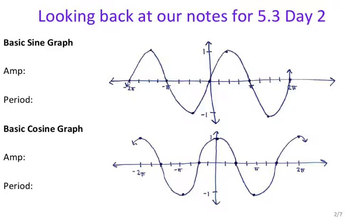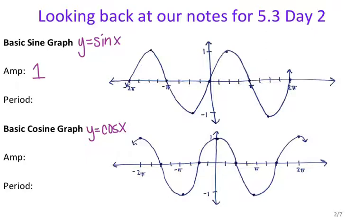We have our basic sine graph, which we got from graphing y equals sine of x. And then the basic cosine graph we got from graphing y equals cosine of x. The amplitude is how high or how low your graph is going to go. The highest that your sine graph goes is 1 and the lowest is negative 1, so the amplitude for the basic sine graph is 1. Same thing for cosine — the highest is 1 and the lowest is negative 1, so the amplitude for cosine is also 1.